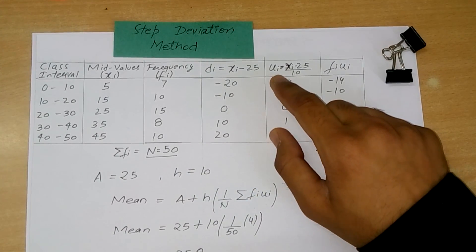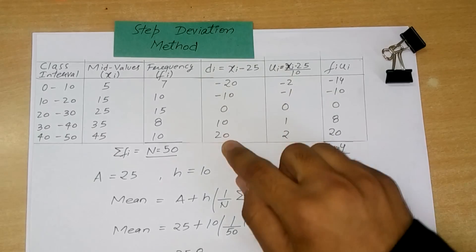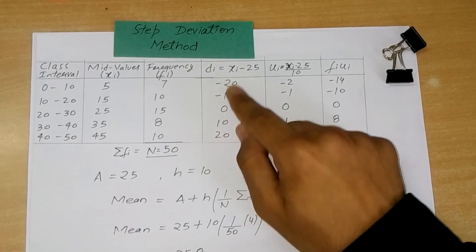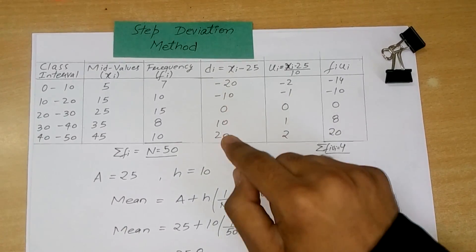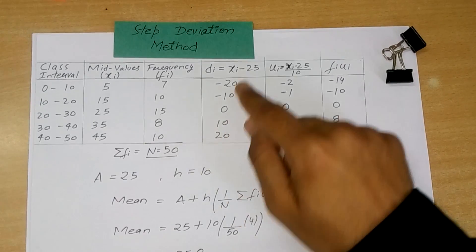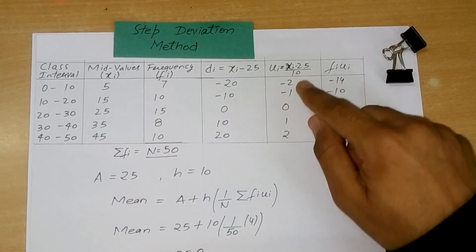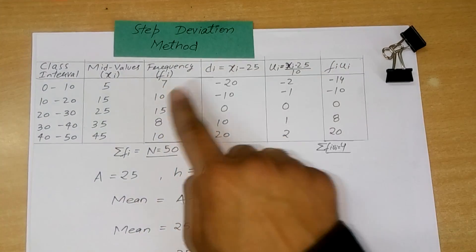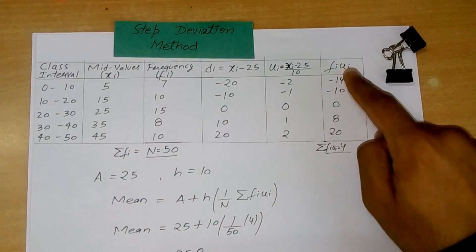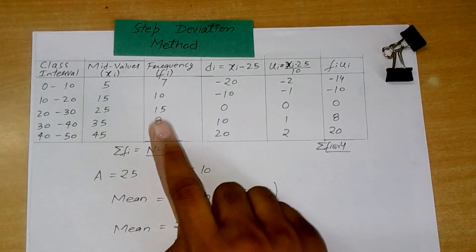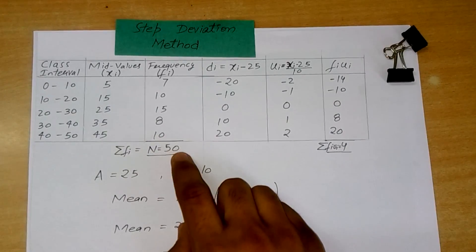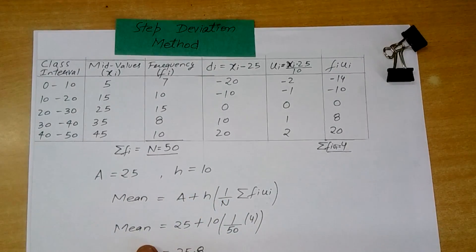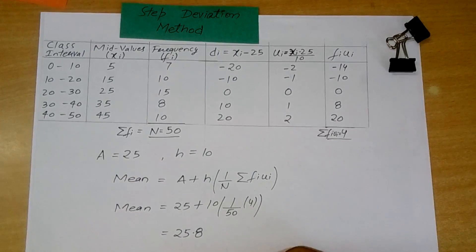To make it even easier, we calculate u_i by taking the common factor 'h' out and dividing d_i by h. The value of h is 10 here — you can take 5 as well, but 10 is more appropriate. So we get u_i values of minus 2, minus 1, 0, 1, 2. Since we have frequencies, we multiply each frequency by u_i to get f_i·u_i. The sum of frequencies is 50, and we calculate the result from there.